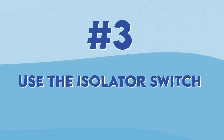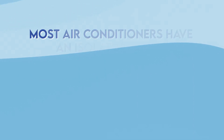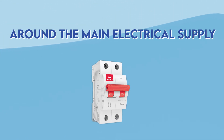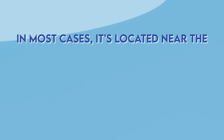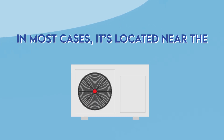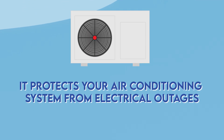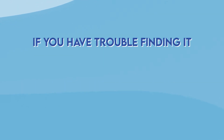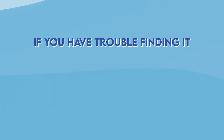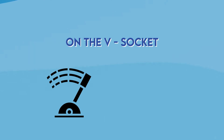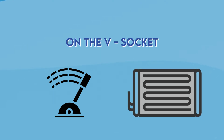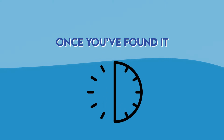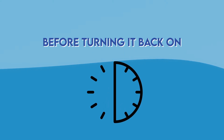Third, use the isolator switch. Most air conditioners have an isolator switch around the main electrical supply. In most cases, it's located near the outdoor unit and it protects your air conditioning system from electrical outages. If you have any trouble finding it, it's usually a lever on the socket near the condenser. Once you've found it, turn it off and wait half an hour before turning it back on.